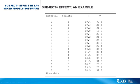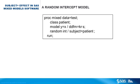Let's begin with this simple example, which consists of data from several hospitals. Each hospital has multiple patients, and each patient has four measurements of X, a covariate, and Y, the response variable. Let's ignore the hospital for now and just consider the random patient effect.